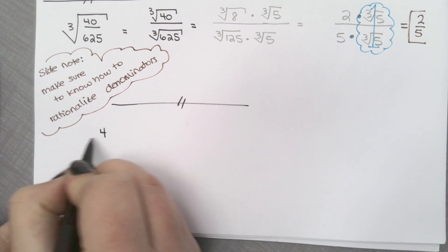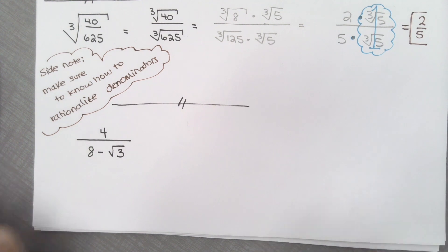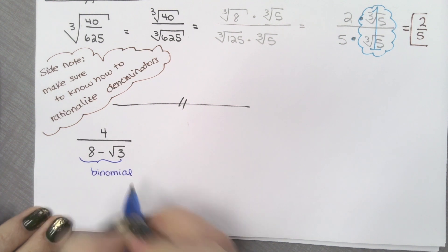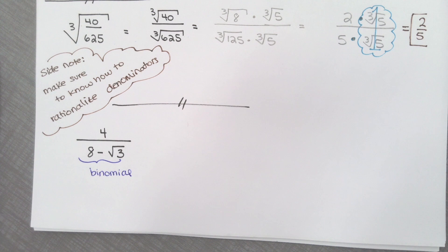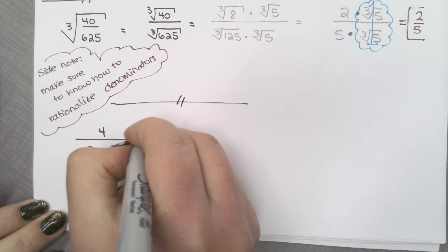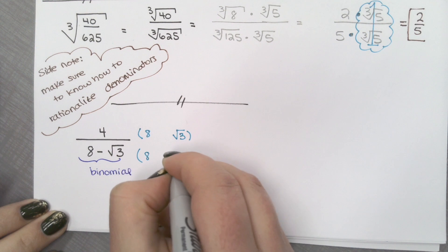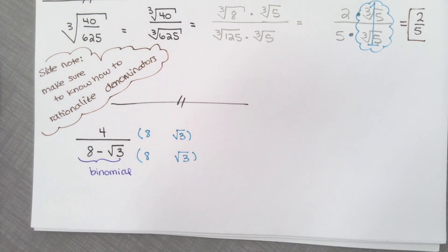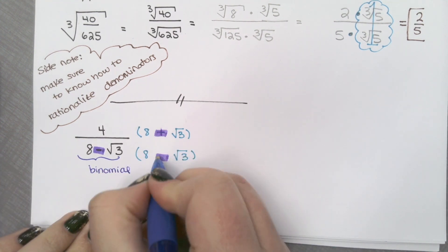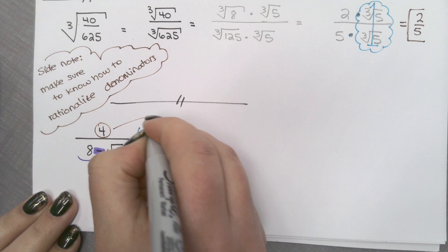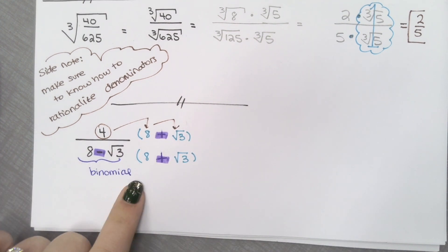So we have 4 over 8 minus the square root of 3. Notice this is a binomial. And whenever you have a binomial in your denominator, you're going to have to multiply by the conjugate. So to multiply by the conjugate, you're going to multiply 8 plus root 3 top and bottom — the middle symbol is going to be changed. Originally we have subtraction here, so we need to make it addition. In your numerator, you have a monomial times a binomial, so you're going to have to distribute that 4 inward. Here in the denominator, you have a pattern.